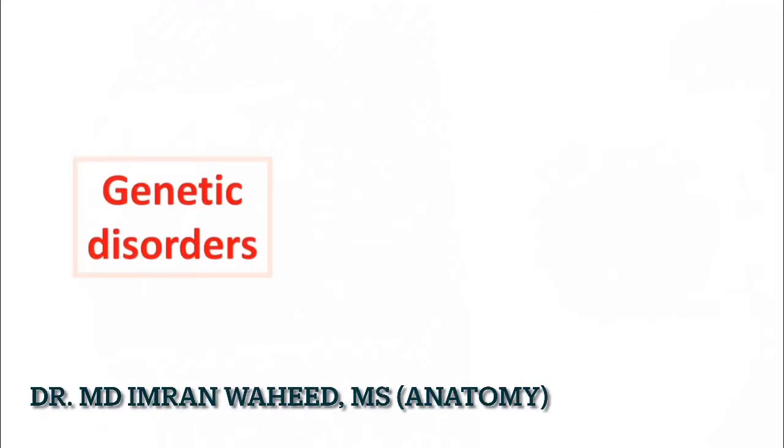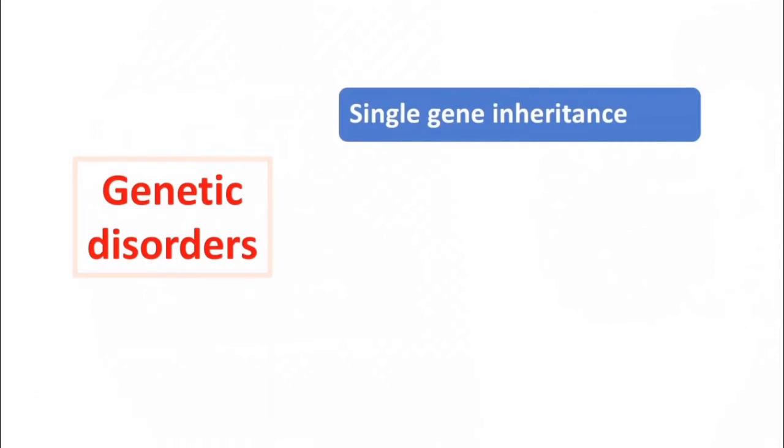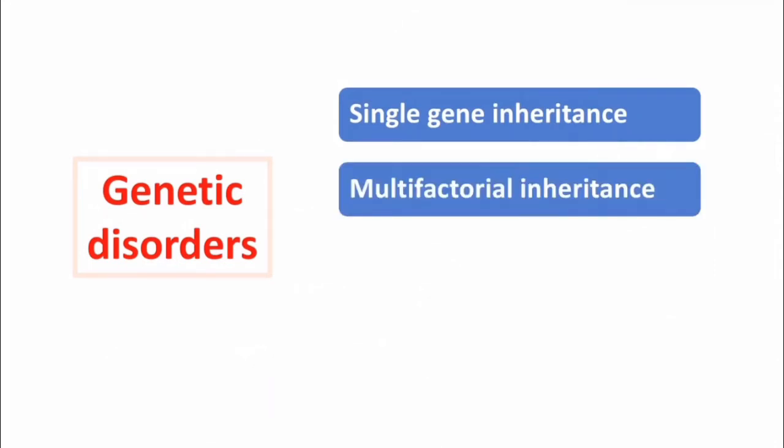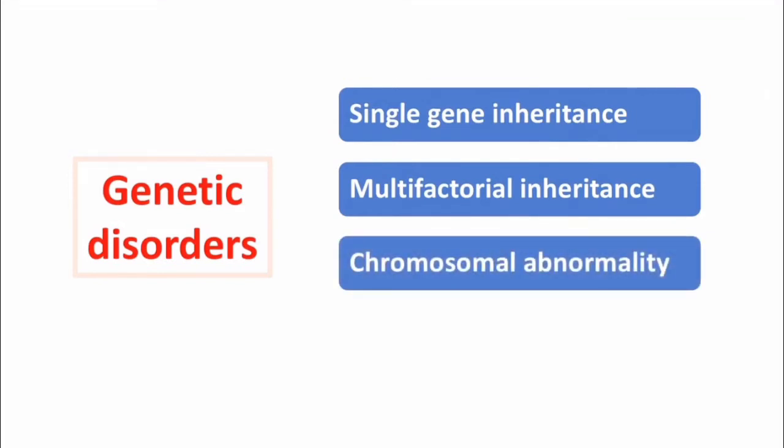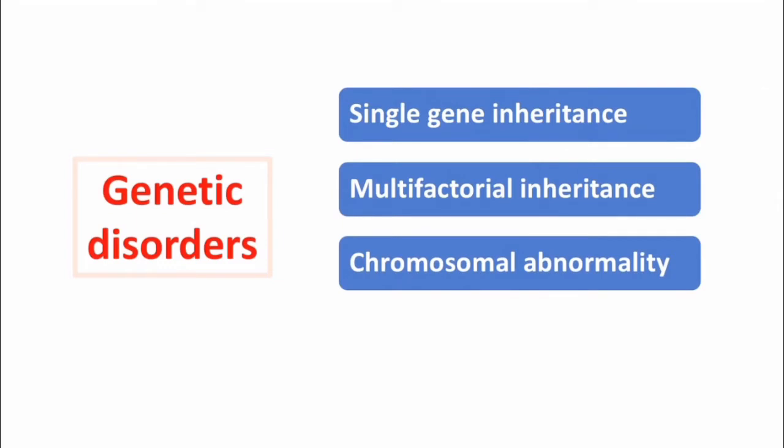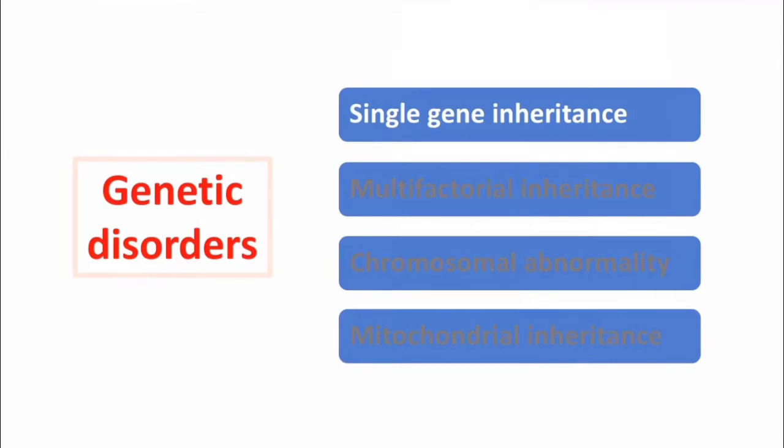There are different types of genetic disorders. For example, disorders due to single gene inheritance, due to defect in multiple genes enhanced by environmental factors, chromosomal abnormality (structural or numerical abnormality of chromosomes), and mutation or defect in the mitochondrial DNA. But today we will be discussing only single gene disorders.